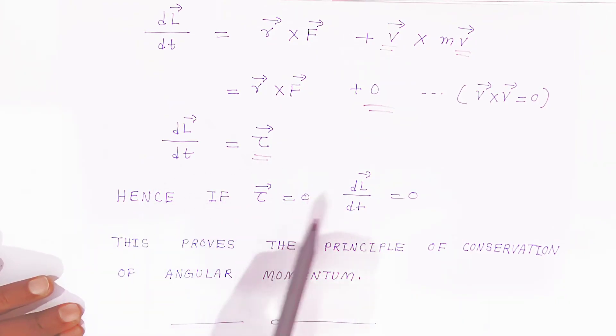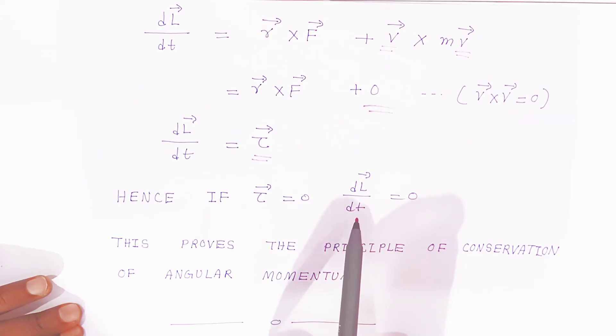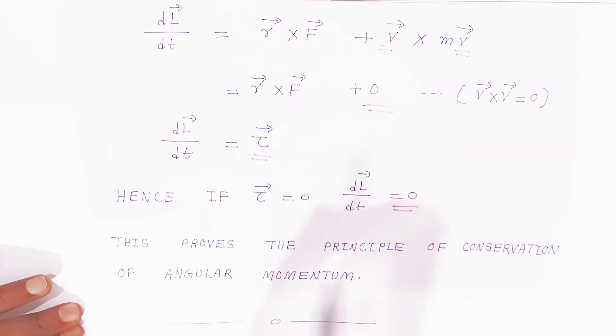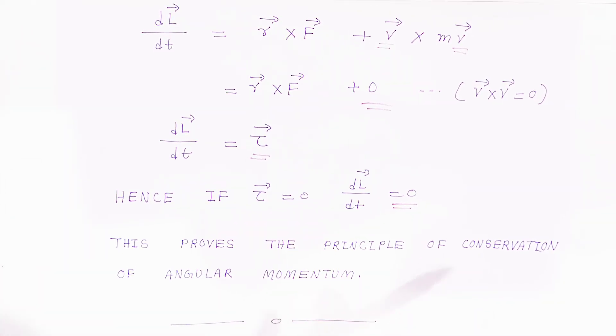Hence if torque is zero, dL bar upon dt equals zero. This proves the principle of conservation of angular momentum. This is coming for two marks question. It is very important for examination point of view. If you like my video please share it, subscribe it. Thank you very much. God bless you.